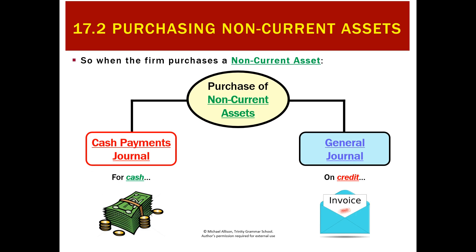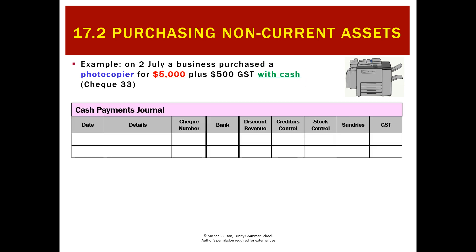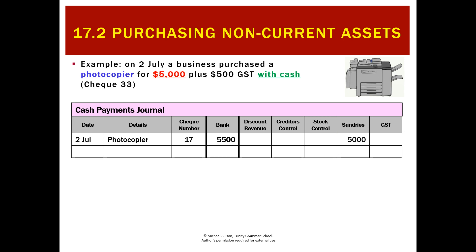For example, on the 2nd of July a photocopier is bought for $5,000 plus GST with cash. That would go in the cash payments journal. We enter the date, details (photocopier), the check number, and we paid $5,500. Since we're not buying stock, it won't go in the stock column — it goes in sundries. We also record the GST. That's a transaction we've been doing for months.